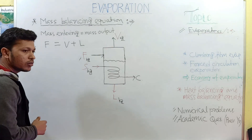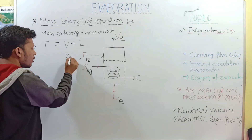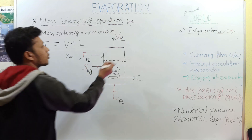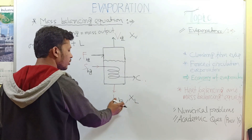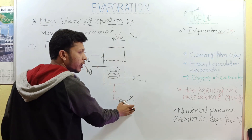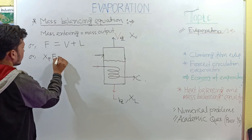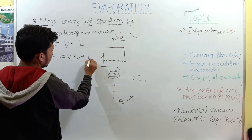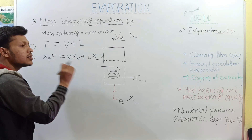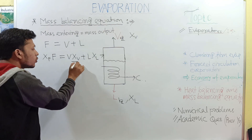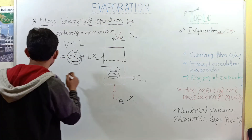More elaborately, if you consider mass as solid content, then xf is the amount of solid present per kg in the feed, xv is the amount of solid per kg in the vapor, and xl is the amount of solid per kg in the concentrated product. Since vapor contains a negligible amount of solid, xv tends to zero and can be omitted from the equation.